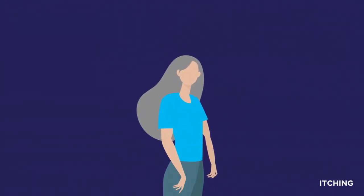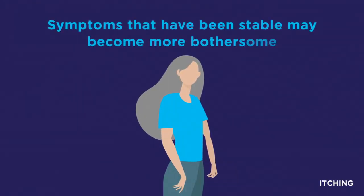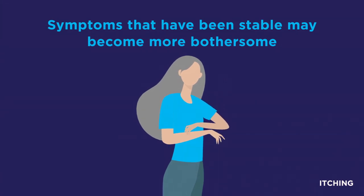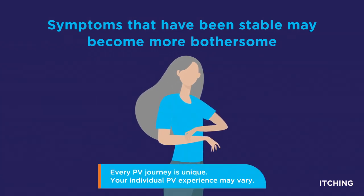Let's look at how symptoms and PV can change over time. Symptoms that have been stable may become more severe. For example, itching may become even more bothersome. This is just one example of how PV symptoms might change. Every PV journey is unique. Your individual PV experience may vary.